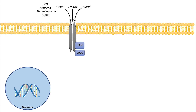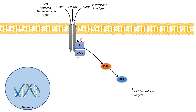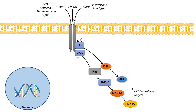It can also be activated by cytokine receptors like interleukins and interferons. When a JAK-STAT pathway receptor gets activated by cytokines or GM-CSF, it activates the JAK protein kinase, or Janus kinase, which autophosphorylates itself. When JAK is phosphorylated, it activates several downstream signaling pathways — one of them is the PI3K-AKT signaling pathway, leading to activation of AKT downstream targets. It also activates the RAS-RAF-MEK-ERK pathway, increasing cell survival.